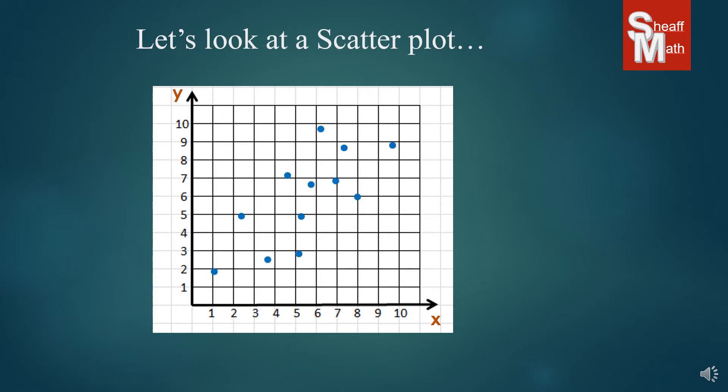Scatterplots have random points that represent different types of data. It could be anything. So let's say a survey was done and all of this information was put in, we plotted all the points, and this is what would happen.